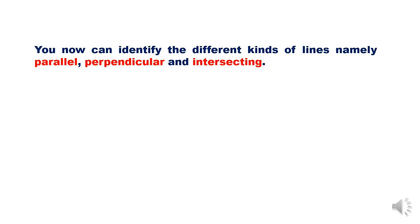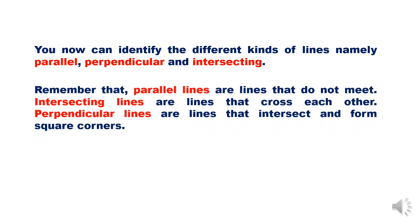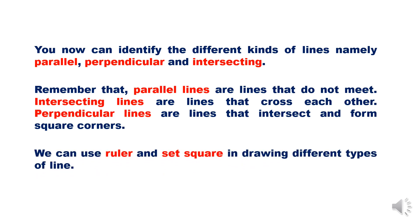You can now identify the different kinds of lines, namely parallel, perpendicular, and intersecting. Remember that parallel lines are lines that do not meet. Intersecting lines are lines that cross each other. Perpendicular lines are lines that intersect and form square corners. We can use a ruler and set square in drawing different types of lines.